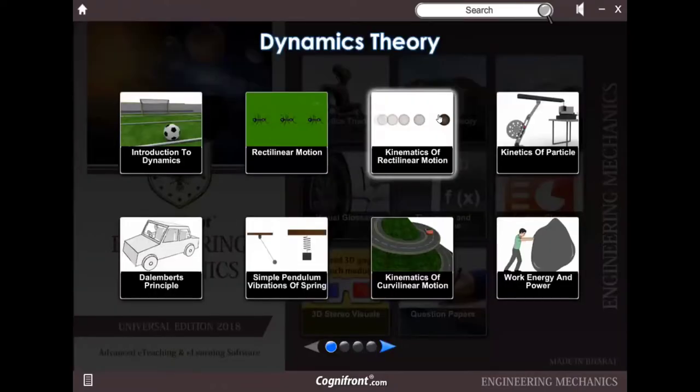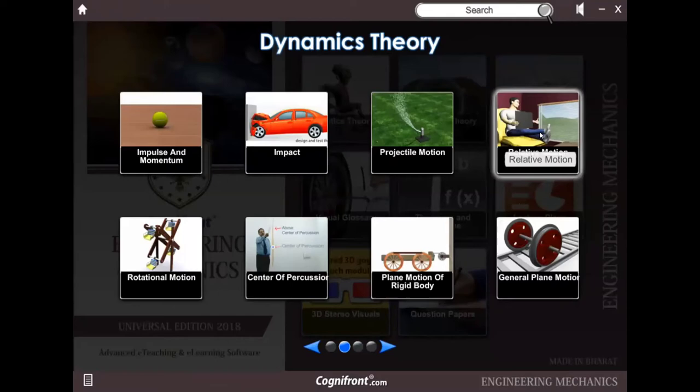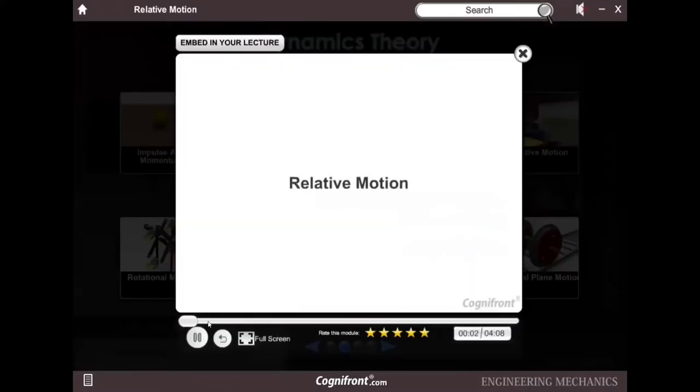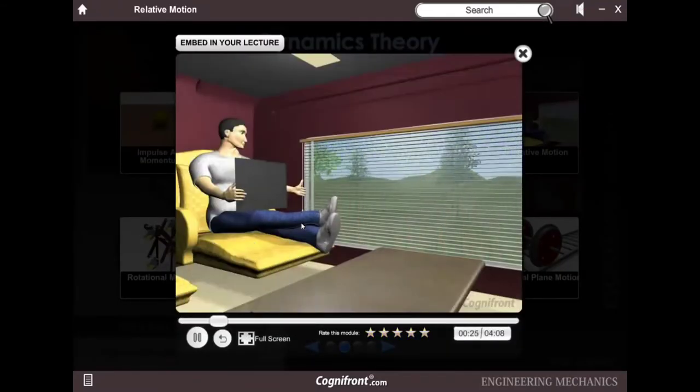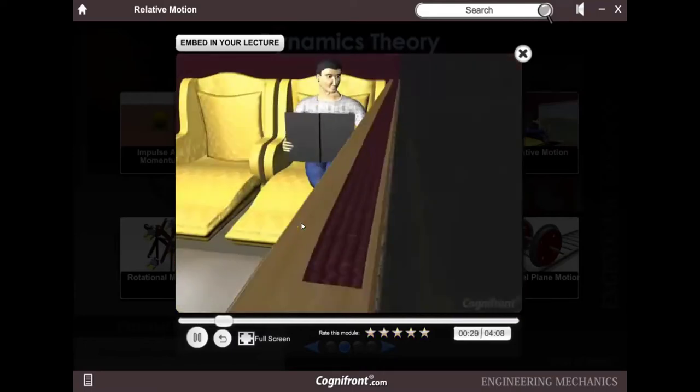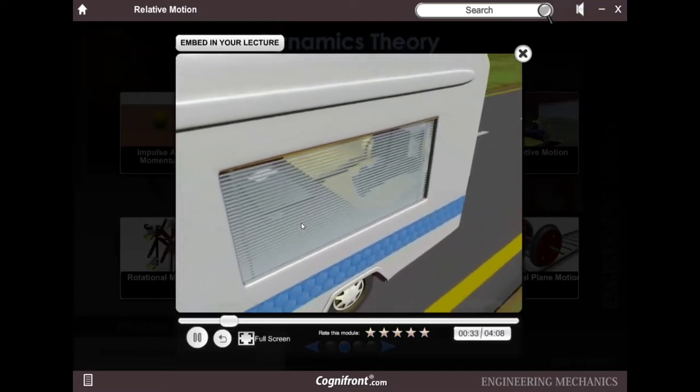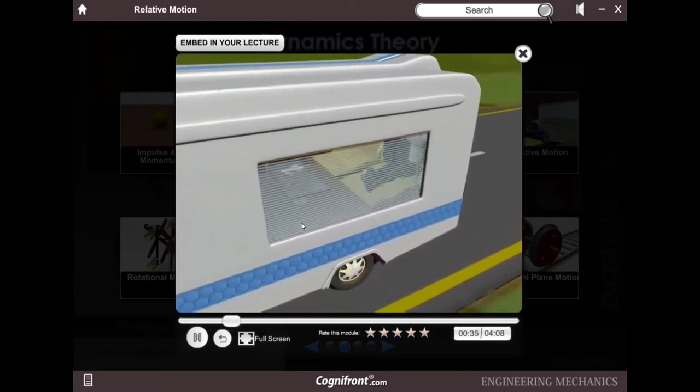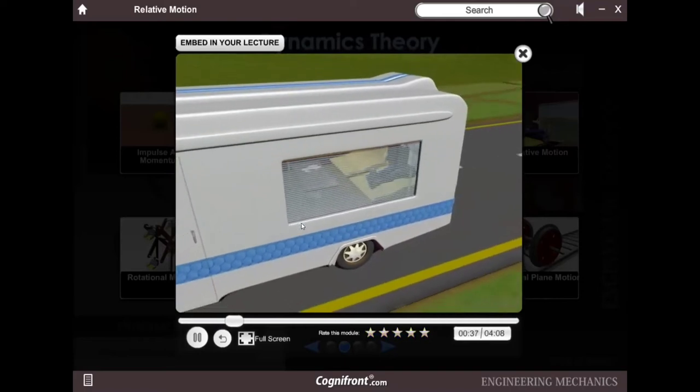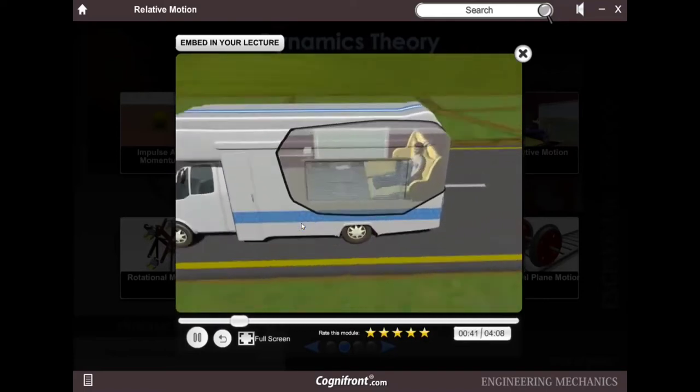I'll take you now to dynamic theory animation. Let's check this out. Relative motion. Window, he sees the objects outside the window are moving. Oh, actually the observer is in the caravan. Since the observer is in motion, the objects also appear to be in motion. From this we can say that every motion is relative to the observer.